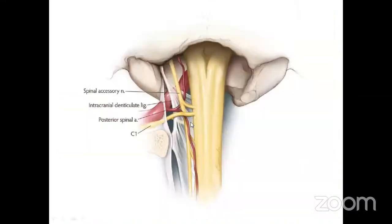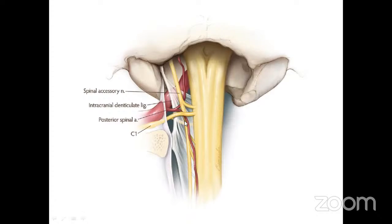In a simplified view: medulla oblongata blends into spinal cord; the dorsal root and ventral root are visible, with the dentate ligament — a wide fibrous structure — arising from the spinal cord and attaching to the dural wall between them. The dorsal and ventral roots join to form the main segmental nerve. The vertebral artery passes behind the dentate ligament and gives off the posterior spinal artery, which divides into descending and ascending segments. The spinal accessory nerve is present dorsal to the tectorial membrane.